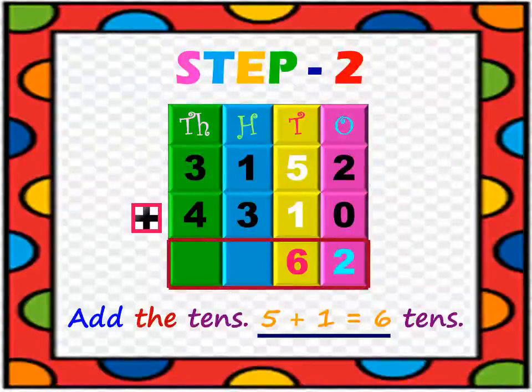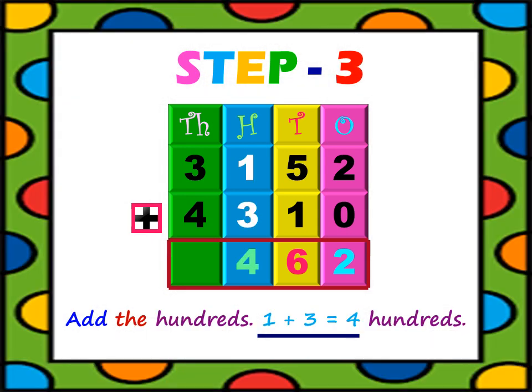Step 2: Add the tens column. The digit in the tens column of 3152 is 5, and of 4310 is 1. So, 5 tens plus 1 ten equals 6 tens. Step 3: Add the hundreds column. The digit in the hundreds column of 3152 is 1, and of 4310 is 3. So, 100 plus 300 equals 400.